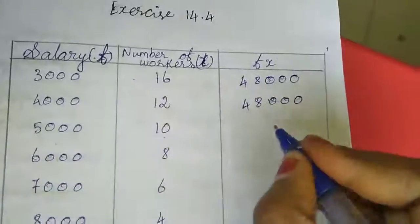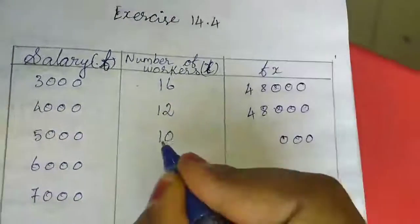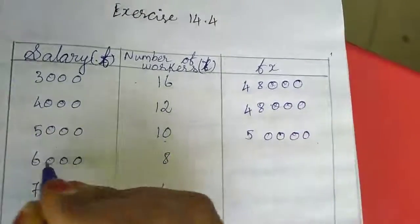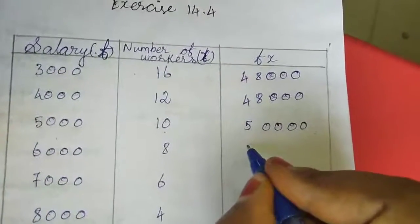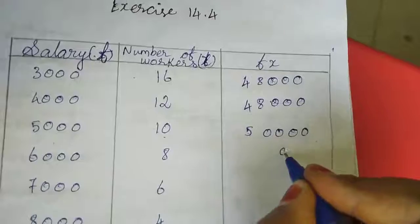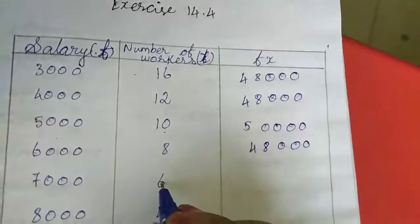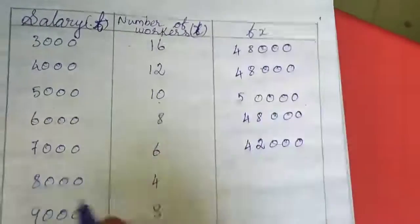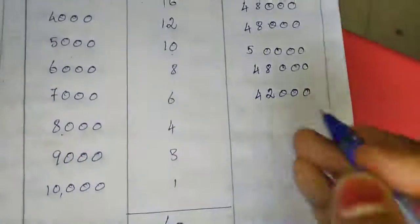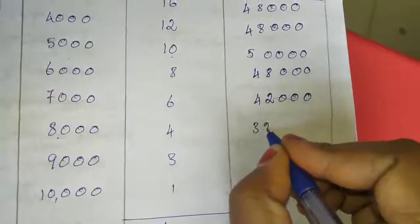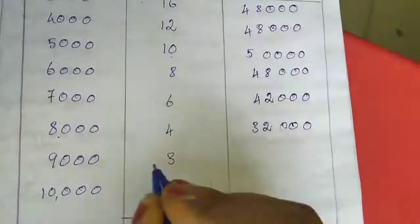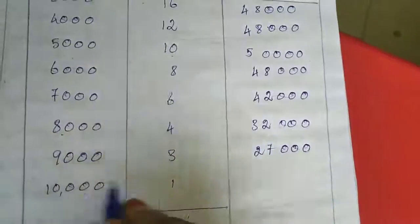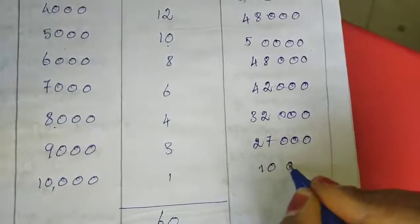Again 5000 into 10, so here 3 zeros, here 1 zero, 1 into 5 is 5. 50,000. Now 6 into 8 is 48. These 3 zeros will come like that. Here 6 into 8, 48. 6 ones are 48,000. As well as the 3 zeros. 7 fours are 32,000. The 3 zeros. 9 threes are 27, as well as the 3 zeros. 27,000.